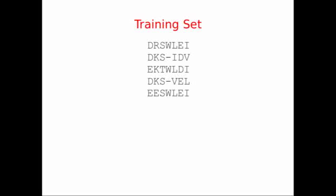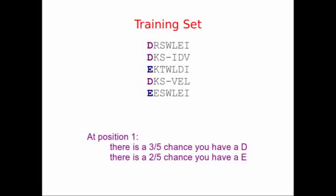We start with a training set where we've built an alignment of proteins. At each position, we score how likely we are to have each amino acid. For example, at position 1, there's a three-fifths chance that we'll have a D in this alignment, and there's a two-fifths chance we'll have an E.